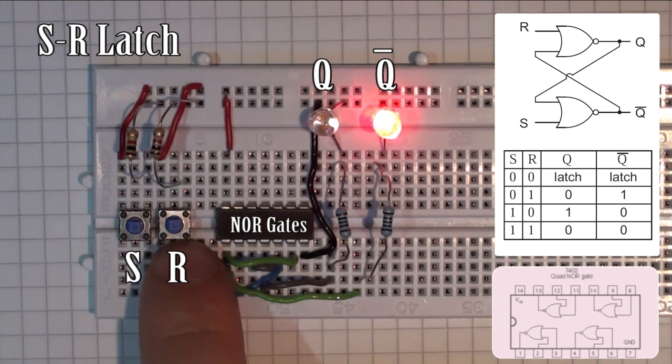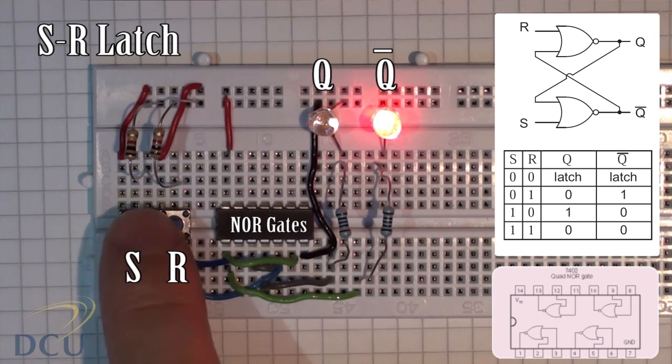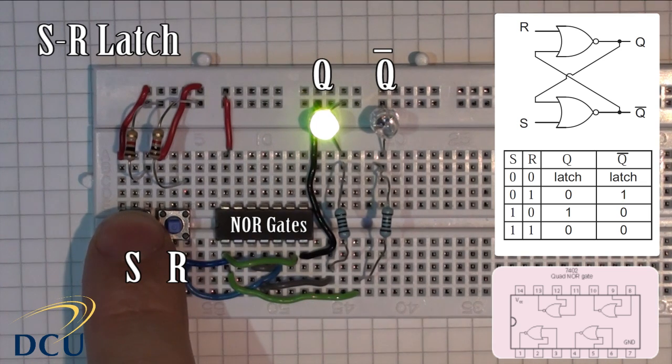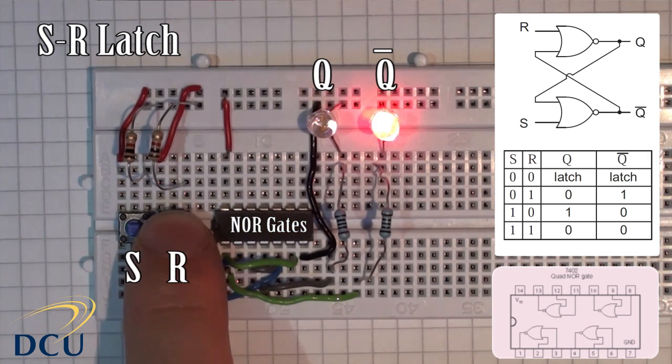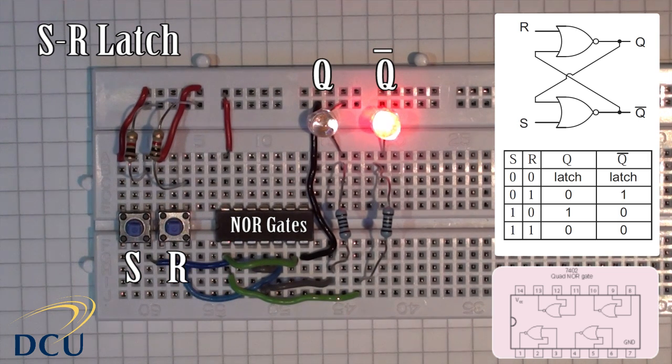So the input is 0, 0. We pressed reset last, so therefore we stay on reset. If I press set, that's got an input of 1, 0. If I let go, we go to 0, 0. It remains at set on the flip-flop. Again, if I press reset, so 0, 1 is my input, and let go, the output remains on reset.